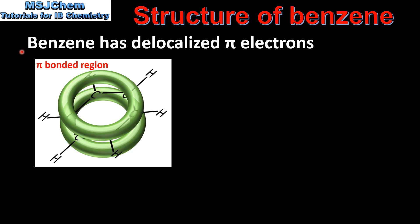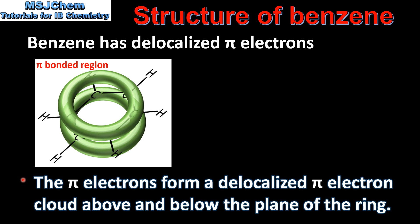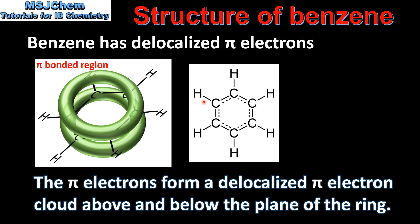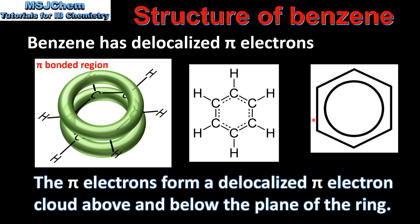The bonding in benzene is best described by the delocalization of pi electrons. The pi electrons form a delocalized pi electron cloud above and below the plane of the ring, represented by the green areas in this diagram. The resonance hybrid structure of benzene shows that the carbon-to-carbon bonds are all of equal length and equal strength. The circle in the middle of the benzene symbol represents the delocalized pi electrons.